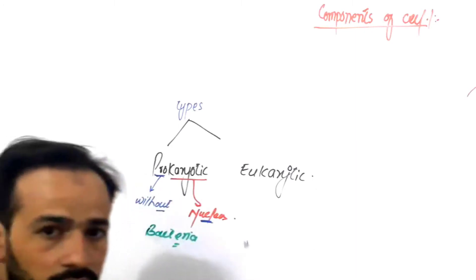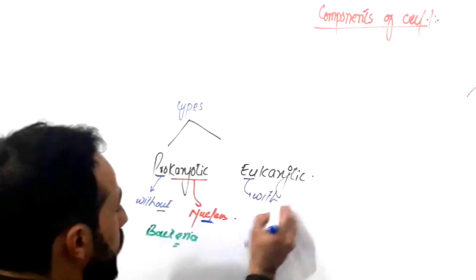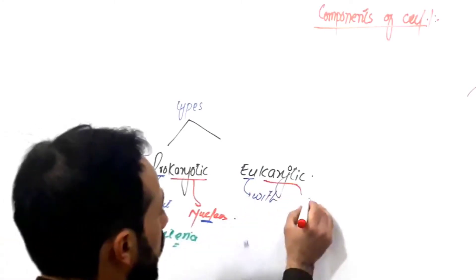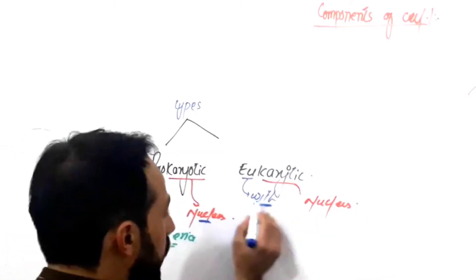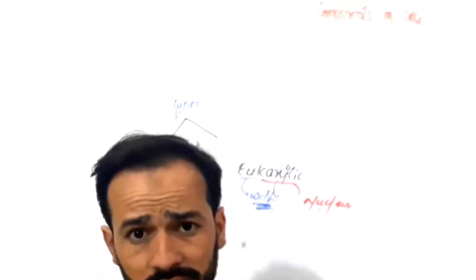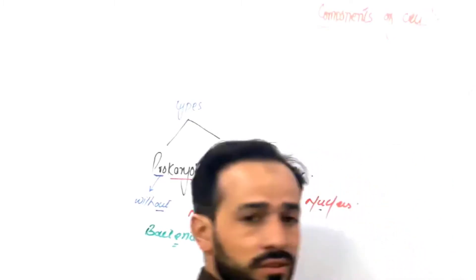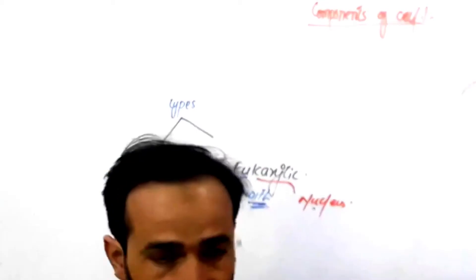The prefix 'eu' means with, and 'karyon' still means nucleus. So those cells which possess a nucleus — which are 'with nucleus' — are called eukaryotic cells. For example, ourselves and plant cells. We possess a well-organized nucleus in our cells. As I have drawn here, this is an animal cell with a nucleus in the center.